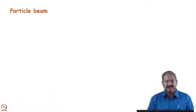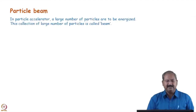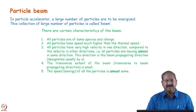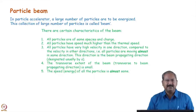So far we also considered only a single particle going nicely on the trajectory, and only sometimes looked at vertical-plane focusing. Actually, the charged particle beam consists of many many particles — a large collection. So what kind of collection can we call a beam, and what are its properties in an accelerator?